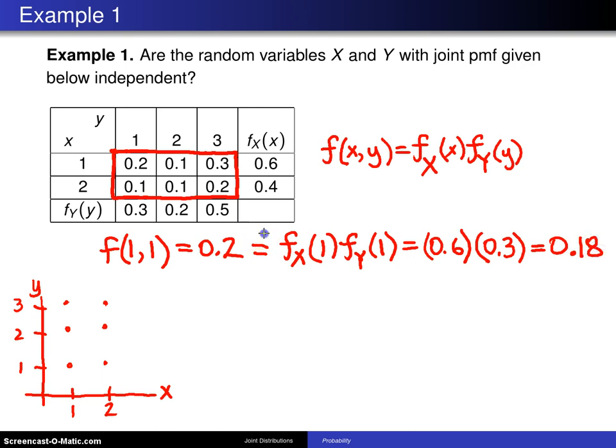0.18 is not equal to 0.2. So to answer the question, are the random variables x and y with joint probability mass function below independent? The answer is no. X and y are dependent random variables.